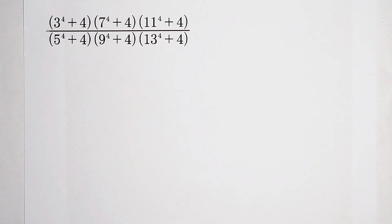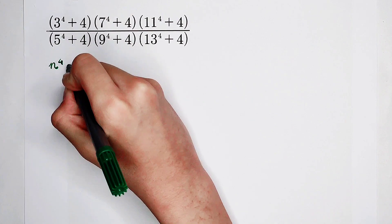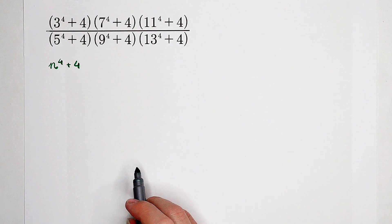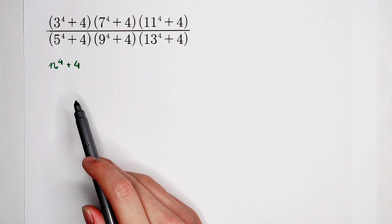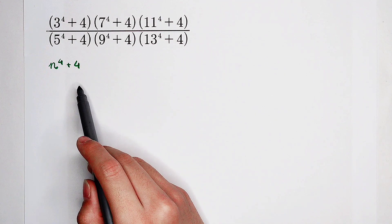Then what should we do? We have found out the general form: n to the power 4 plus 4. As our next step, maybe you have an idea — think about it. Of course, the answer is factorization. However, it's not so easy. How should we factorize this term, this polynomial?